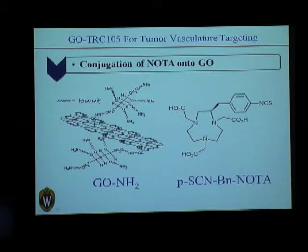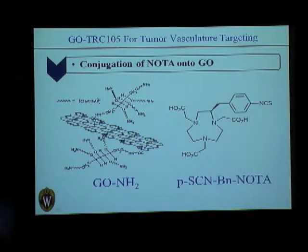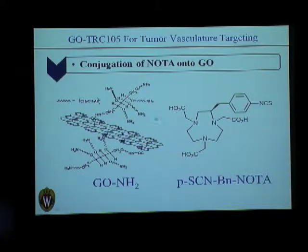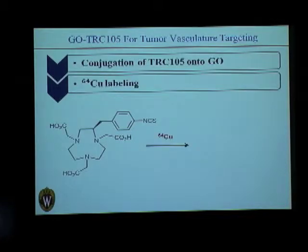NOTA is tri-aza cyclononane tri-acetic acid — a macrocyclic chelator. The compound we used is a benzyl isothiocyanate derivative of NOTA to facilitate attachment to graphene oxide nanosheets. The graphene oxide nanosheets are also functionalized with PEG, which acts as a spacer between graphene and NOTA. Similarly, we attach the antibody to graphene oxide using PEG as well.